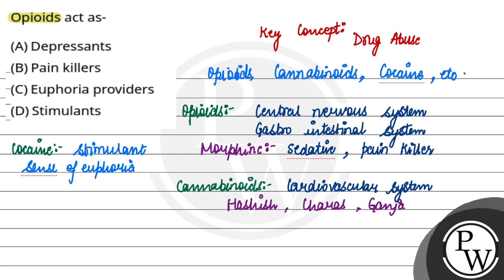This plant is called Erythroxylum coca. These are some particular points. Coming back to the question: what are opioids? Opioids include morphine, and morphine is a painkiller. The correct answer to this question is option number D. I hope you all understood it well. Thank you so much.